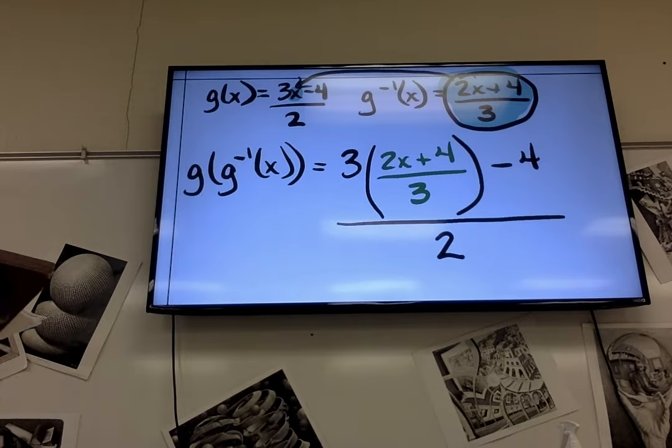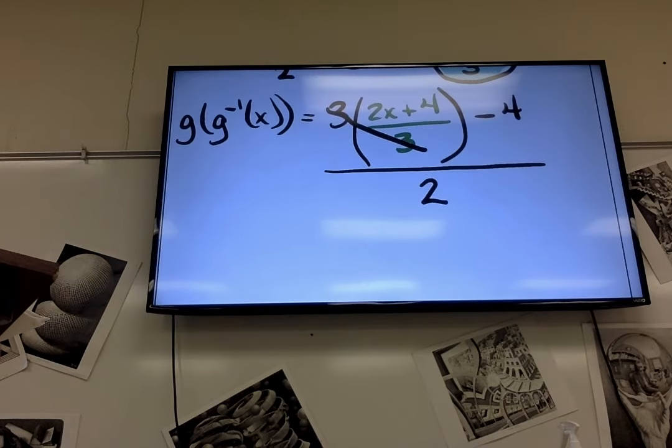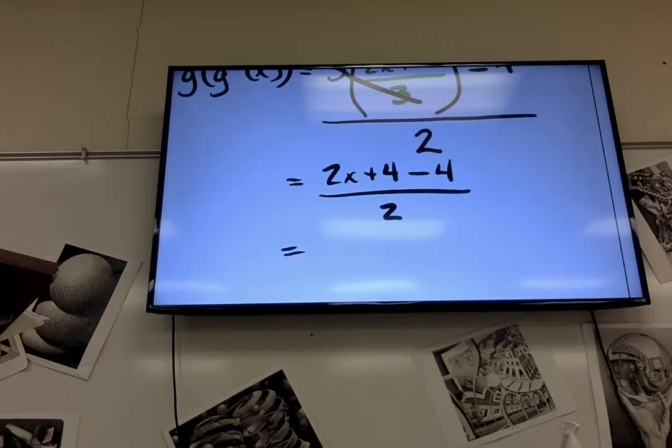Looks nightmarish, but lots of stuff's going to cancel out. Life's going to be great again. Do you see something that will cancel out? The 3's. I have a 3 on top and a 3 on bottom. So, I can go ahead and cancel those. That gives me 2x plus 4. Then I have a minus 4 over 2. What else cancels?